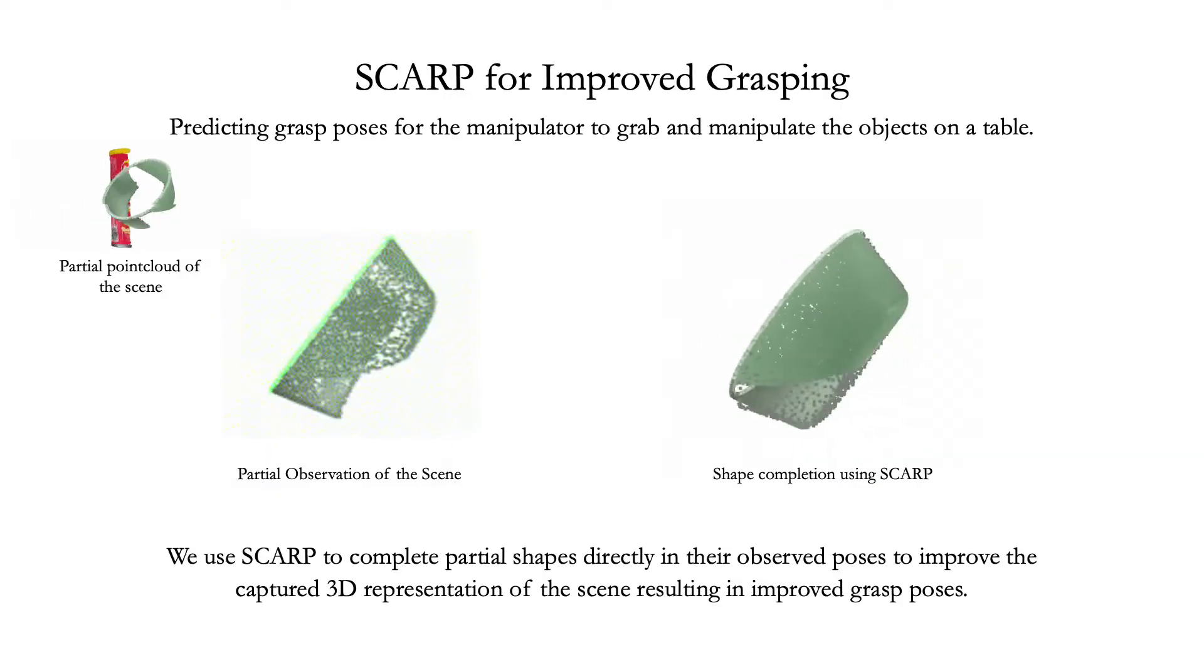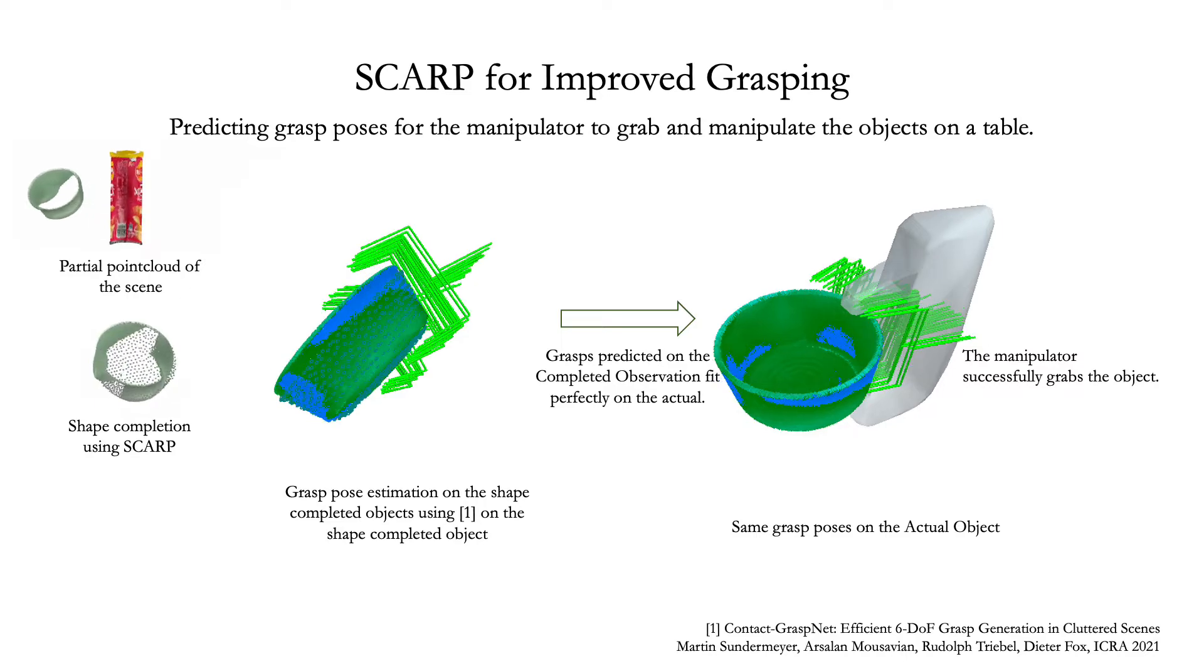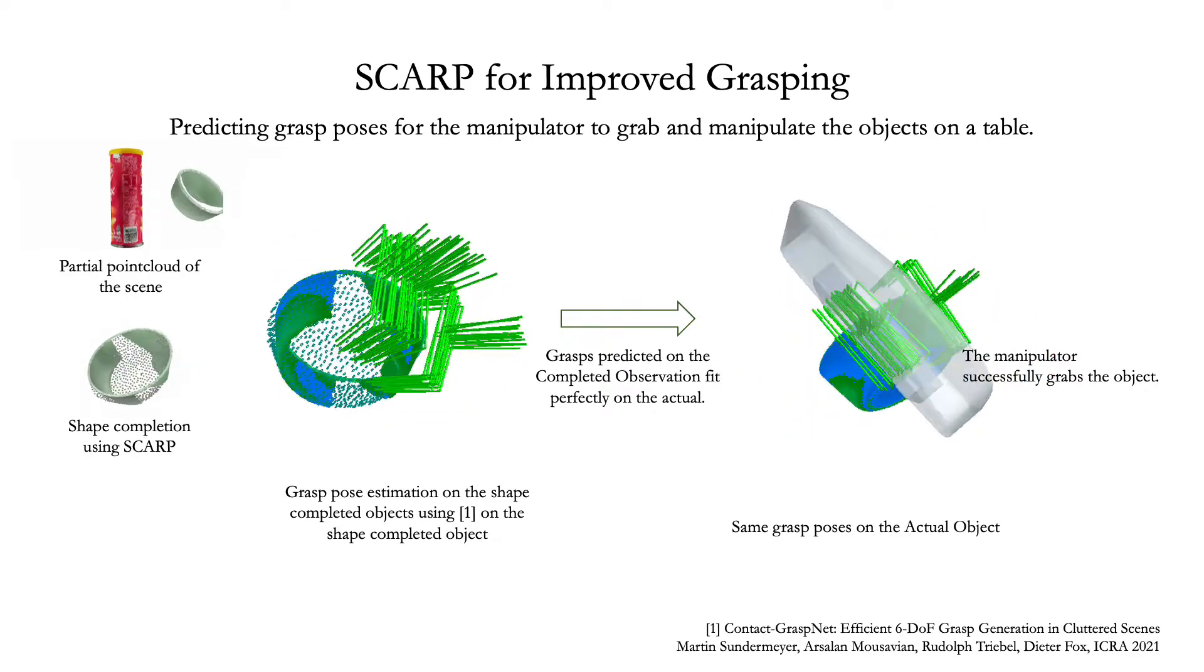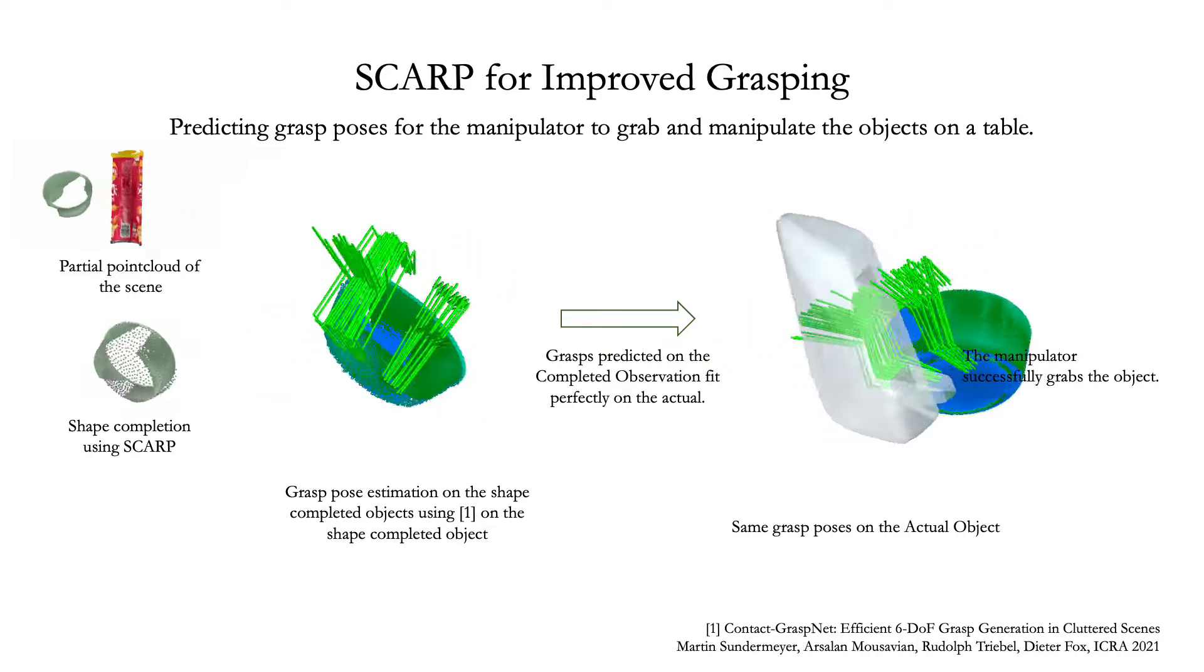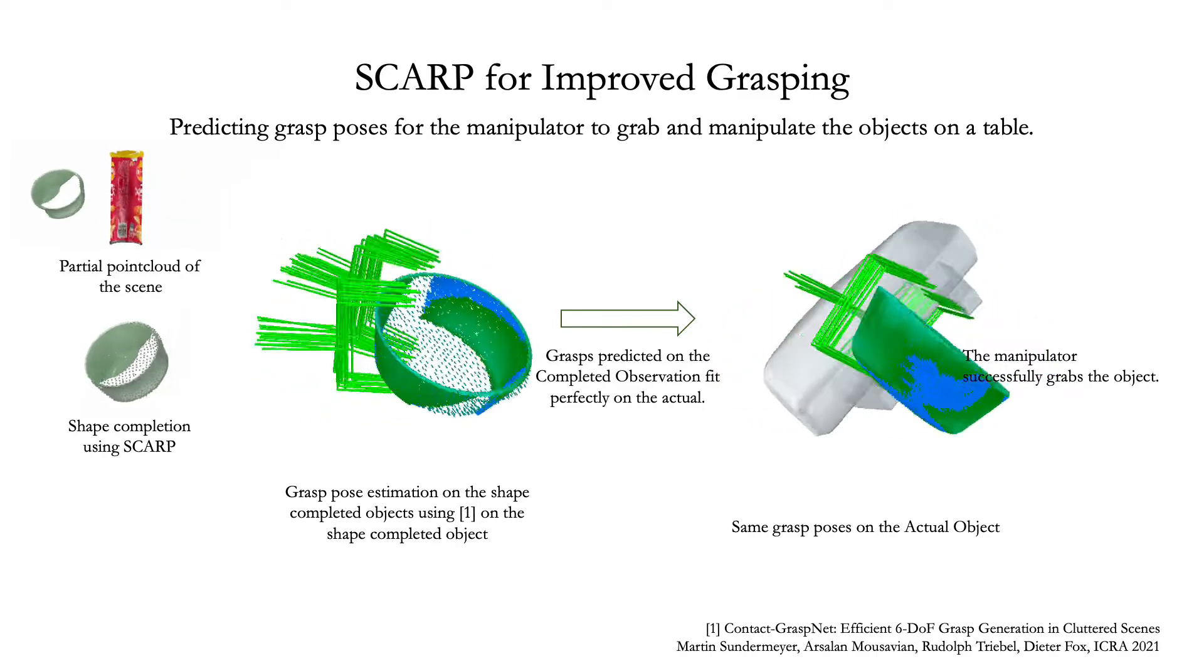We overcome this challenge using SCARP by completing the partial observations. As a consequence of this shape-completed output, the grasps predicted on the observation do not collide with the actual object, thus improving the task of grasp pose estimation.